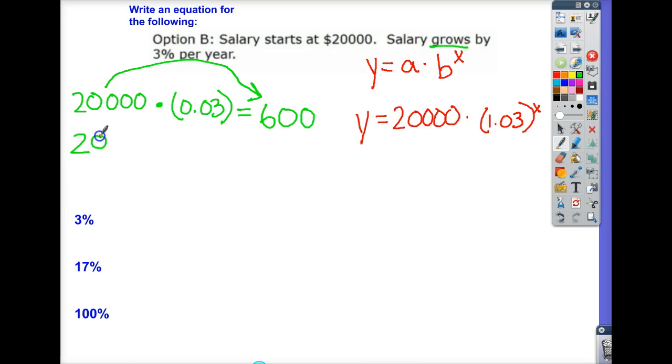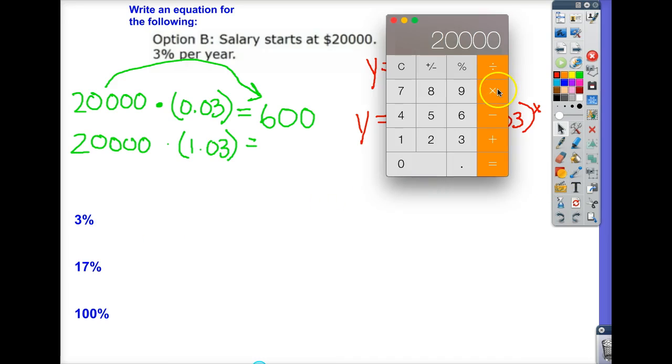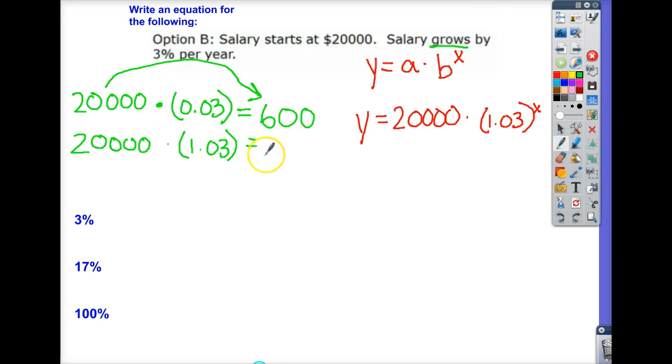Let's look at what 20,000 times 1.03 is. 20,000 times 1.03, 20,600. Hmm, that looks a little familiar. 20,600.